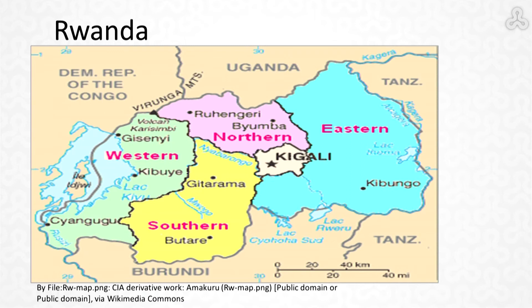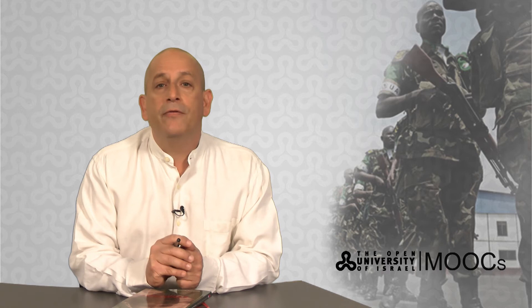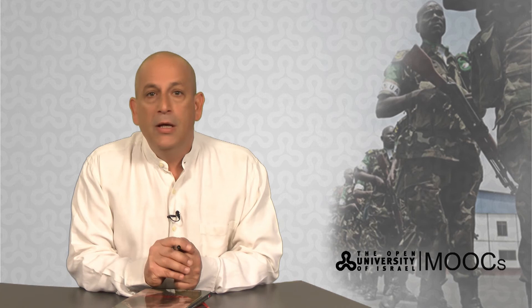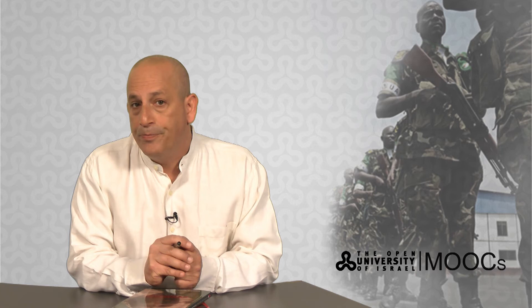Let's talk briefly about Rwanda and try to understand the situation in geographical, economic and ethnic terms. Rwanda is a pretty small country — its territory is more or less the size of the State of Israel. It's situated in southeast Africa, completely surrounded by other countries such as Burundi, Uganda, and Tanzania. It doesn't have its own access to the sea. Rwanda is and has always been a very poor country; the main occupation of its people is rather meager agriculture. It's one of those African countries where someone with ten heads of cattle is considered very rich.